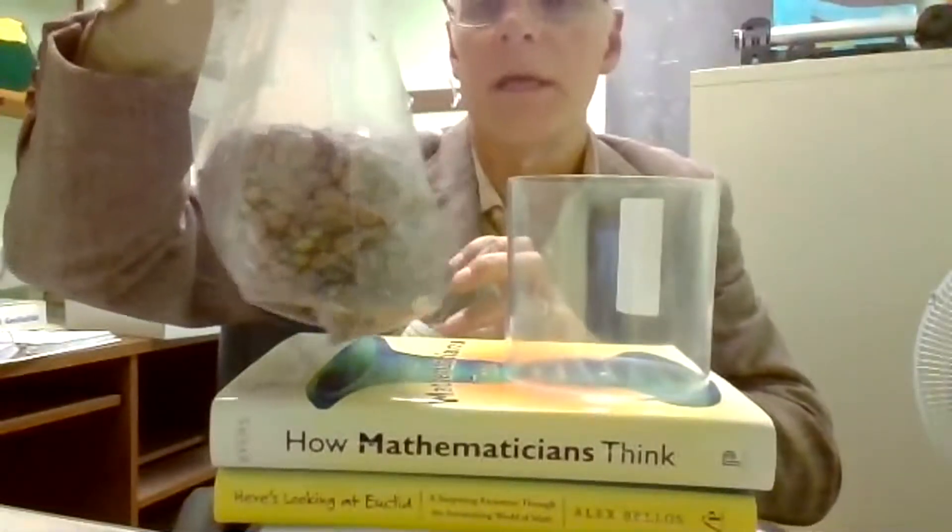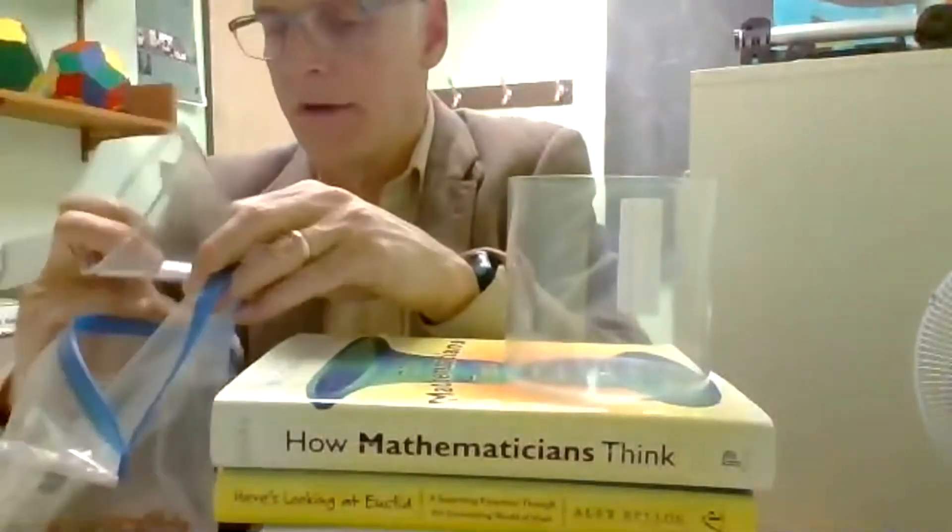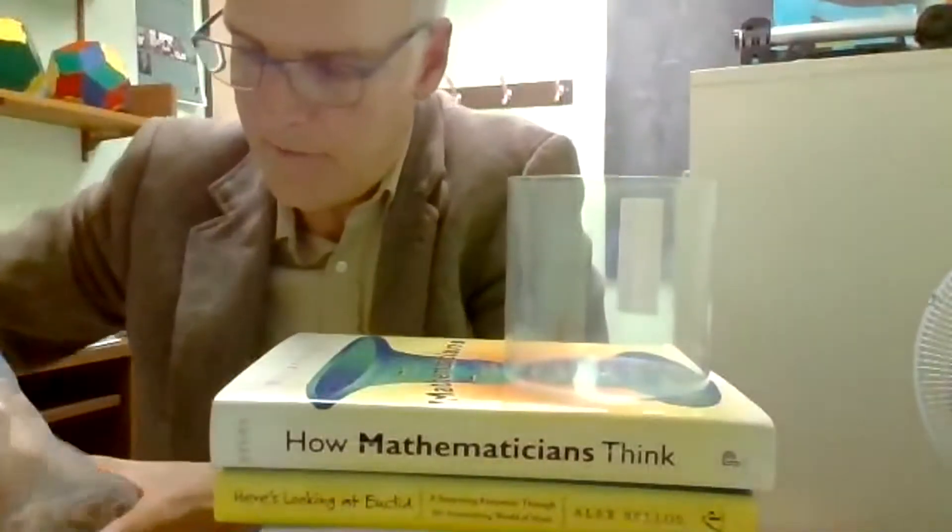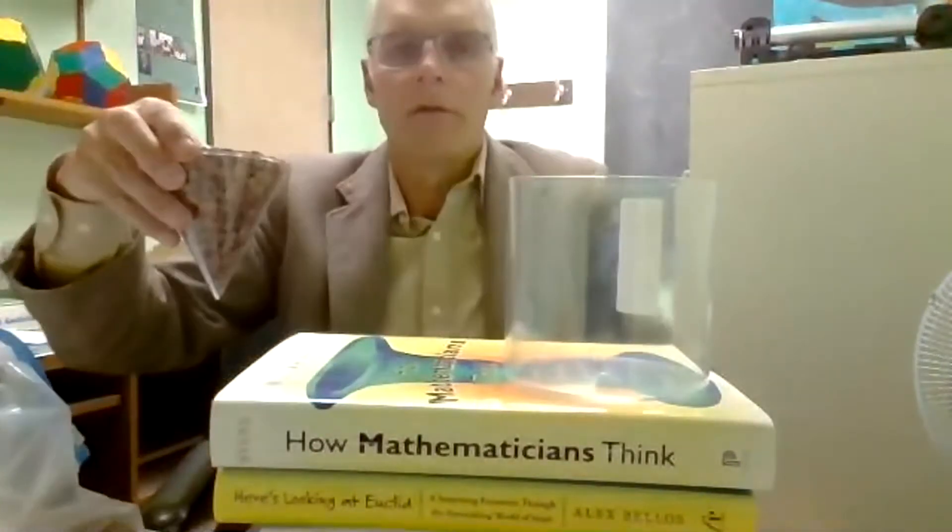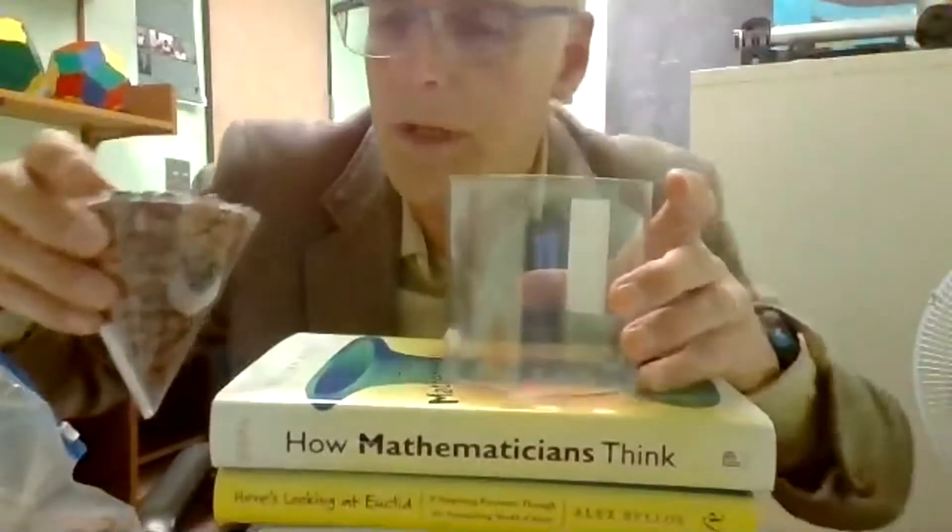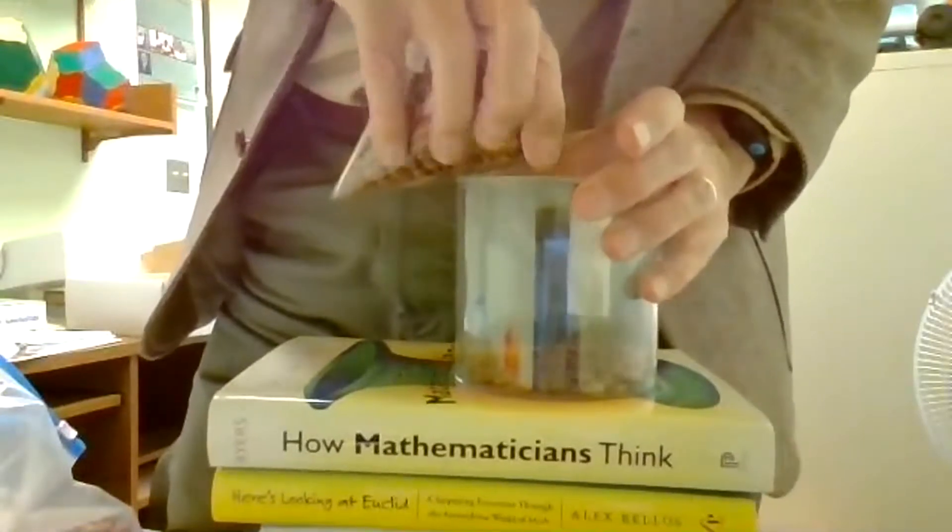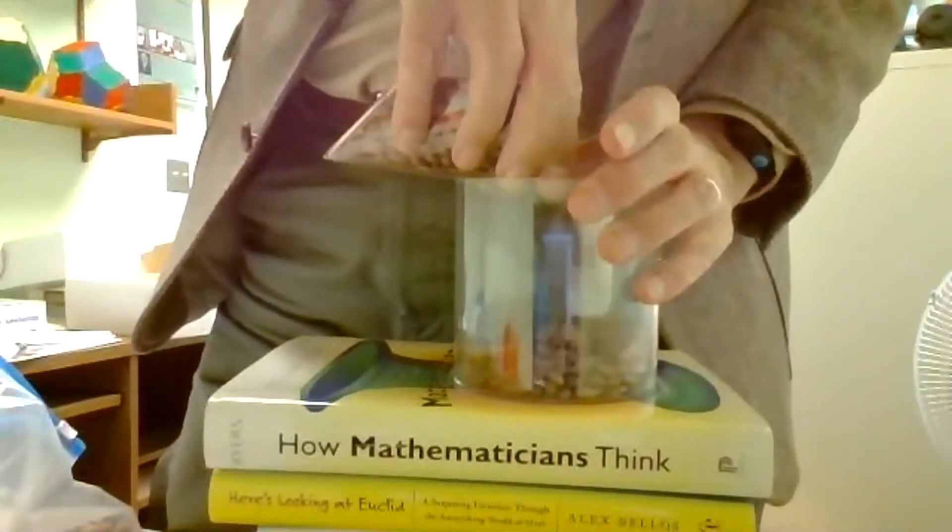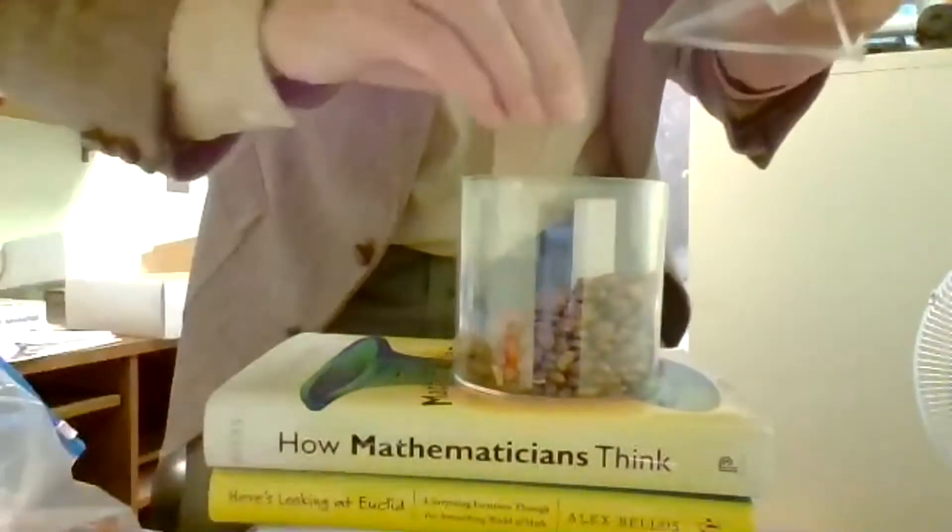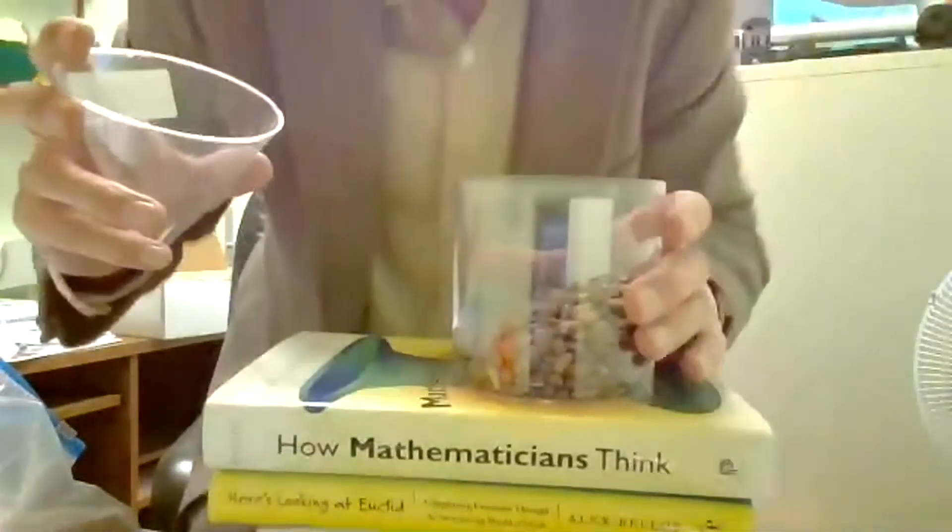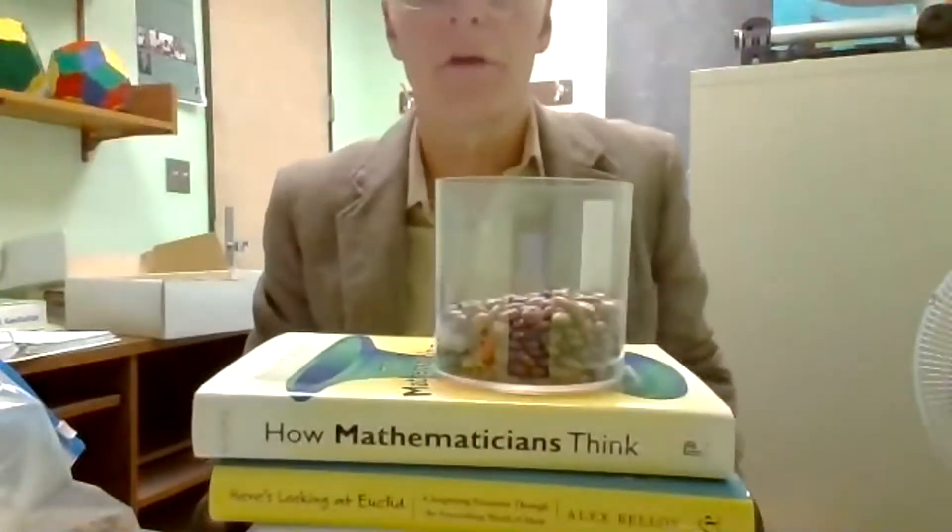I'm going to be scooping out a cone full of beans and pouring it into the cylinder and see what happens. Let's see if I can do this without spilling too much. Looks like I did spill two of them here. Okay, let's get these in here. And you'll notice that this is about one-third of the cylinder.